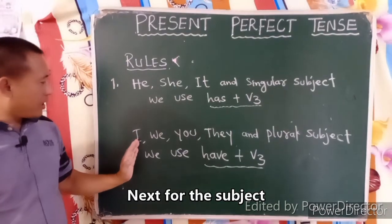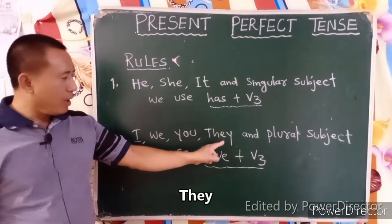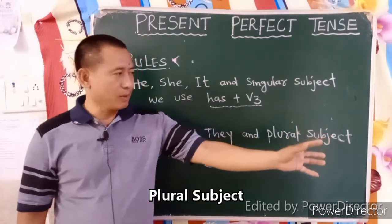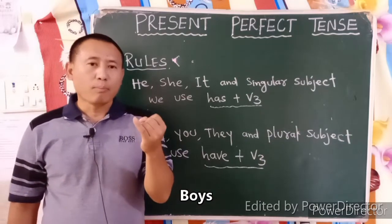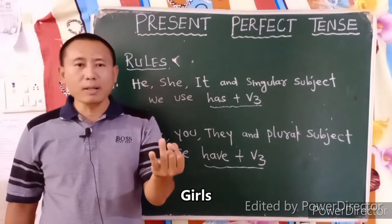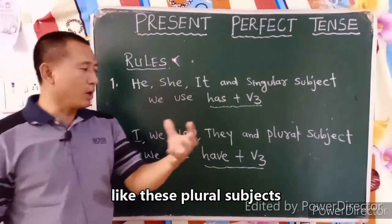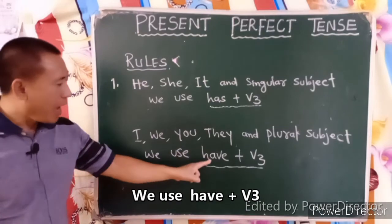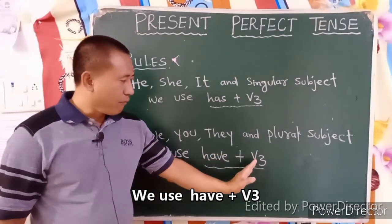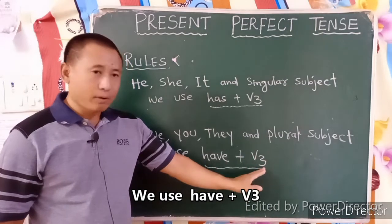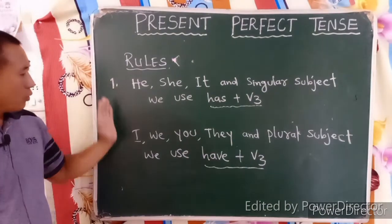Next, for the subjects I, we, you, they, and all plural subjects — plural subjects meaning boys, girls, babies, doctors — we use have plus V3, that is have plus the past participle verb form V3. This is Rule 1.